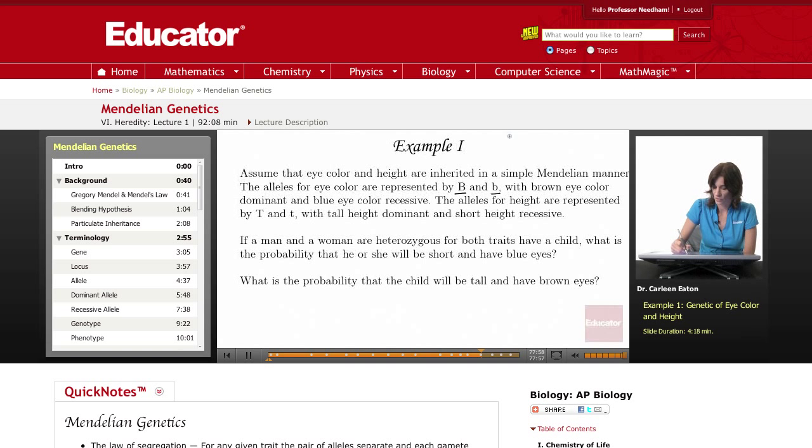So I'm going to start doing some notes. Big B is brown dominant and blue eye color is recessive so little b is blue. The alleles for height are represented by big T and little t with tall height dominant and short height recessive.